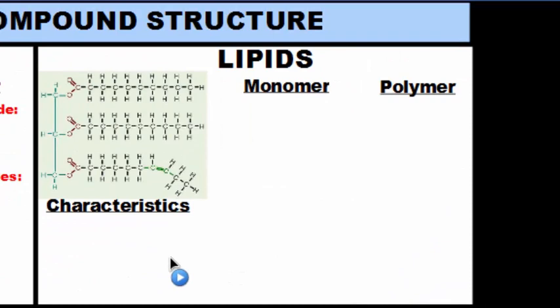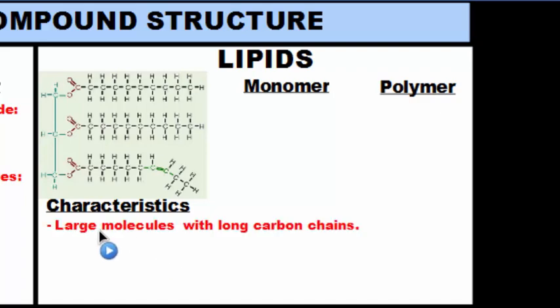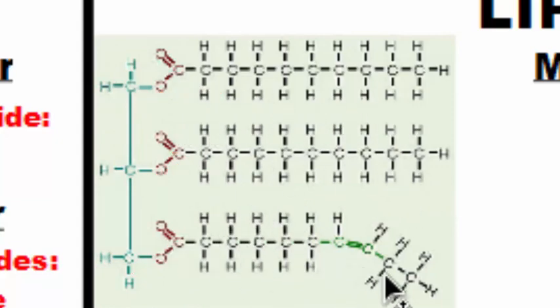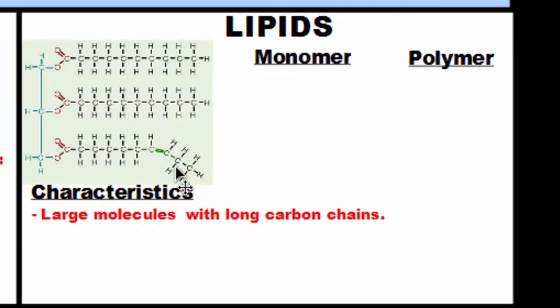A third organic molecule includes the group called lipids. Lipids are also known as fats. Fats include oils, waxes, and cholesterols, as well as fatty tissue that we have in our body. Here are the main characteristics of lipids and how you can identify them. First of all, lipids are usually large molecules with long carbon chains. As you can see here, we have these long carbon chains sticking off this molecule here. When you see these long carbon chains, it makes up a big molecule. These long chains, these big chains, are going to identify a lipid for you.